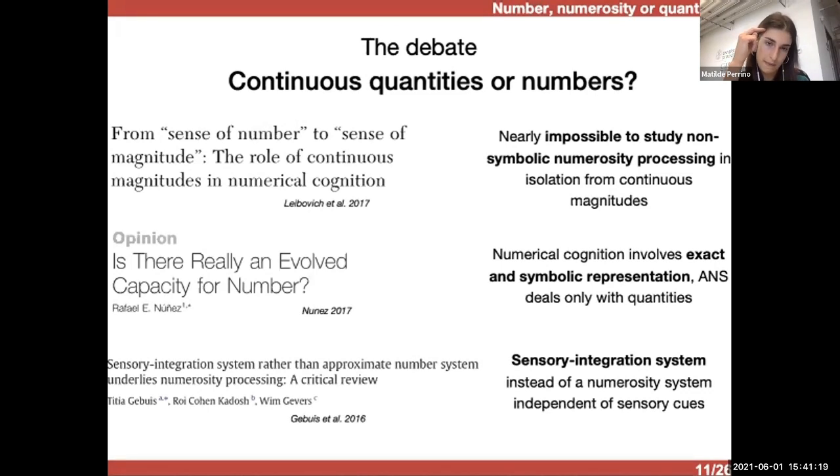And also there are those that claim that numerical cognition involves exact and symbolic representation and that approximate number system deals only with quantities. And then, again, the fact that instead of a numerosity system, there is a sensory integration system, which therefore is not independent from the sensory cues.